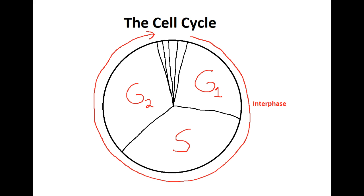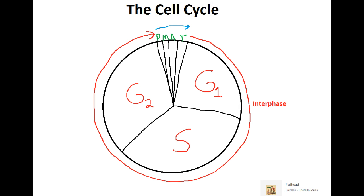Then we have the last section drawn in green, which is part of mitosis: P — prophase, M — metaphase, A — anaphase, and T — telophase. This is collectively called the mitosis phase of the cell cycle. This is the part where the cell is actually dividing. As you can see, it only spends a small amount of time actually dividing.